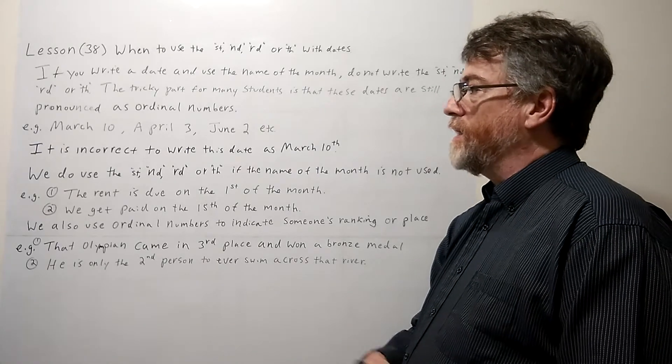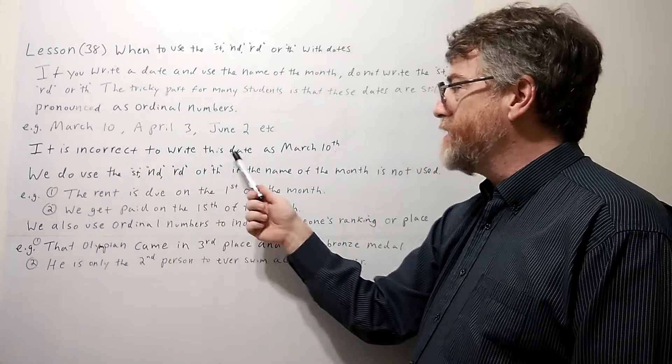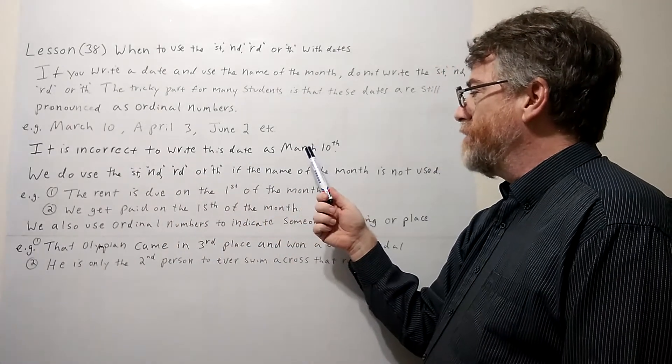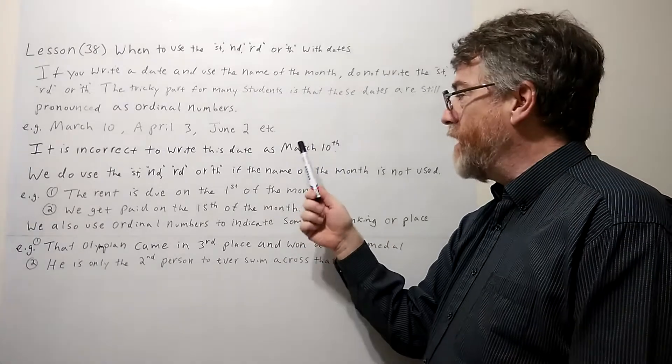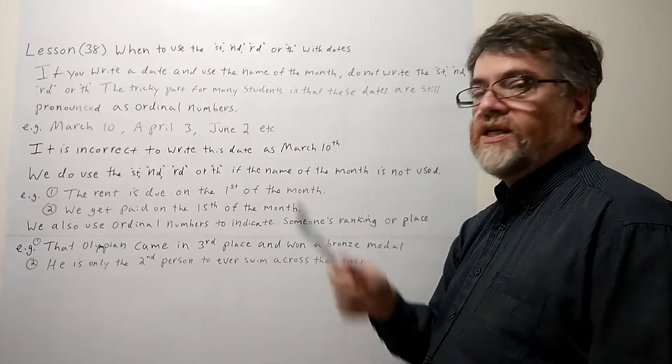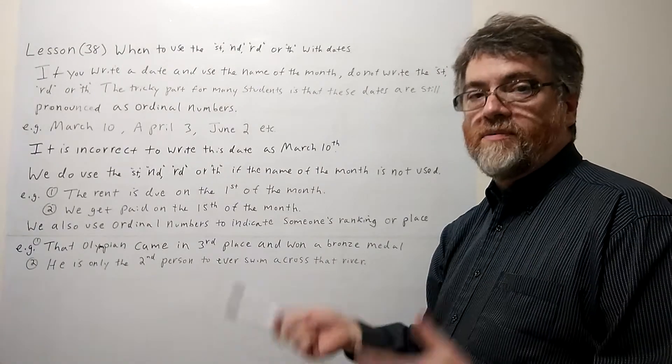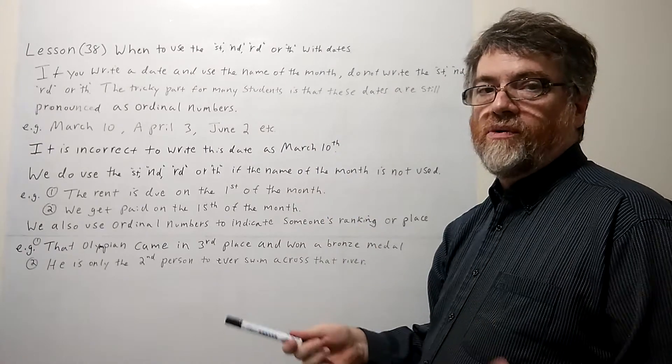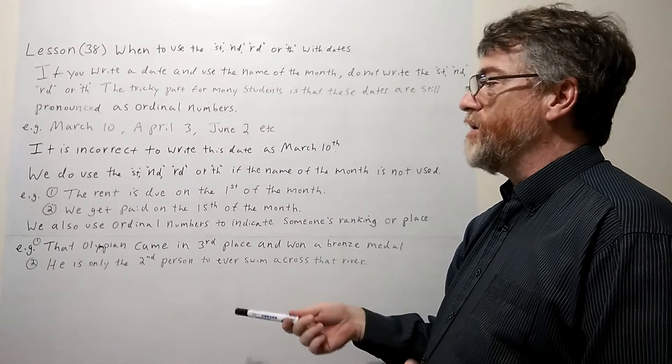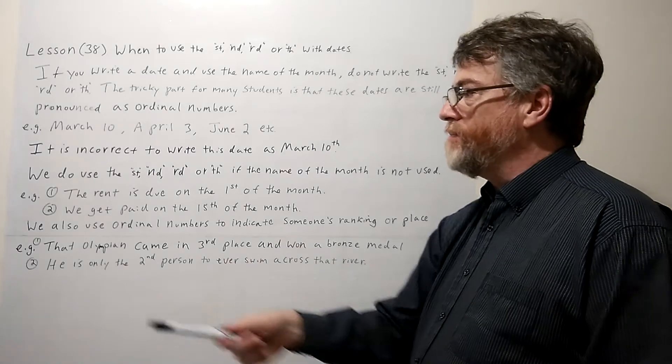Okay, good. Let's look at the next note. It is incorrect to write this date as March 10th with the TH there. If the month is written here, the TH is not written there. Yeah, so again, it's not optional. You write the month, you don't have the TH or whatever it is, whether it's the RD or ST.